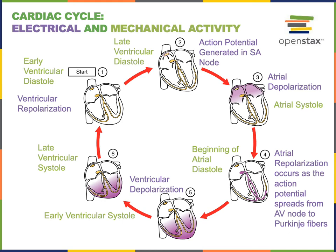As the ventricles contract, the pressure of blood in the ventricles increases and forces the AV valves closed during the isovolumetric contraction phase of early ventricular systole. Once ventricular pressure is higher than the pressure in the arteries, the semilunar valves are forced open and ventricular ejection occurs during late ventricular systole. This is then followed by ventricular repolarization as the ventricles enter diastole and relax during early ventricular diastole. The AV and semilunar valves are both closed during the isovolumetric relaxation phase. Once the pressure inside the ventricles falls lower than the pressure in the atria, the AV valves open and we return to the ventricular filling phase of the cardiac cycle.